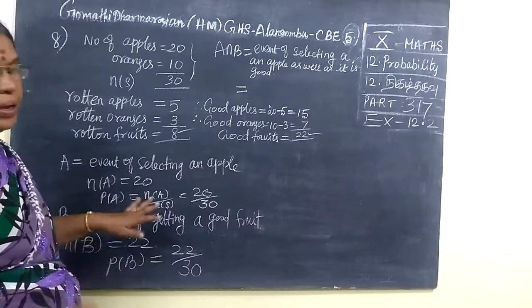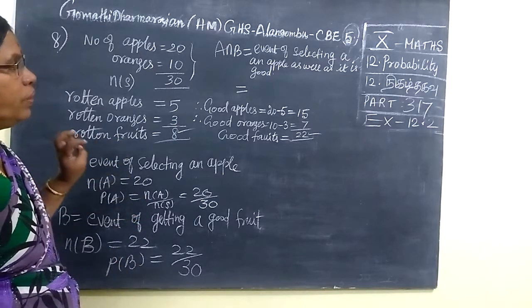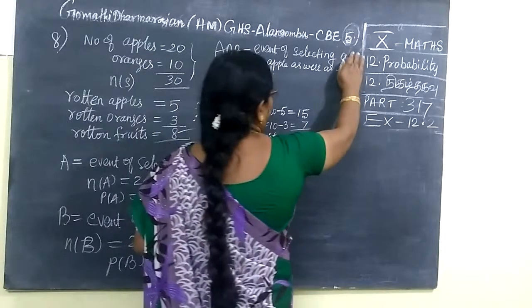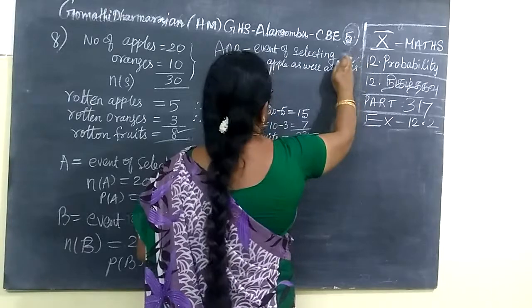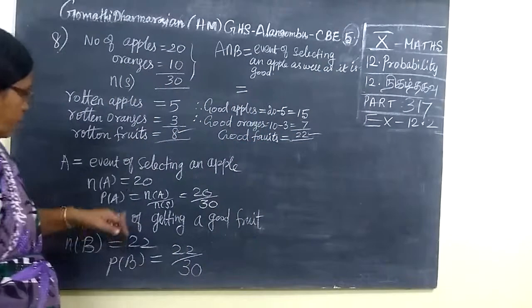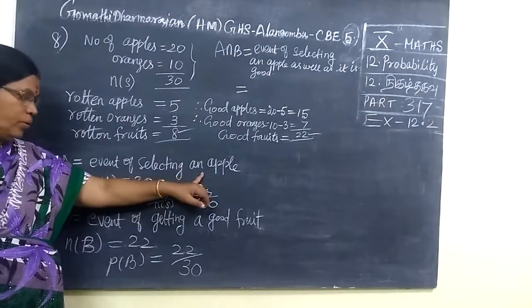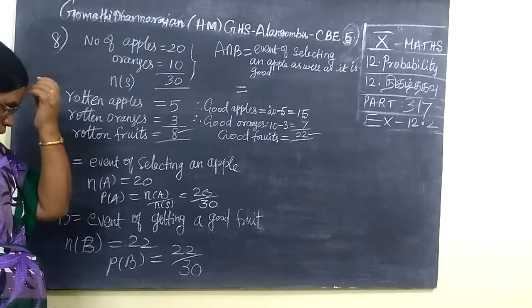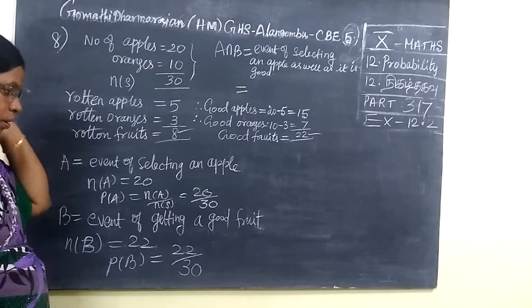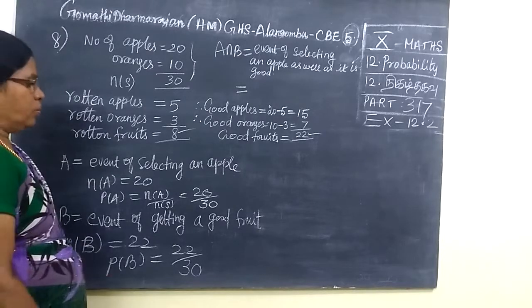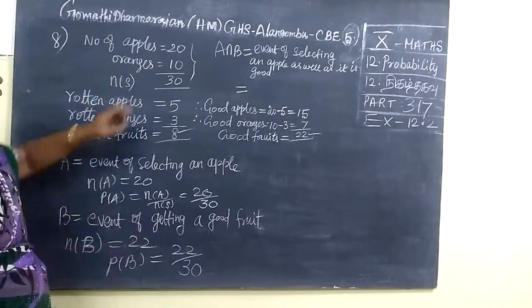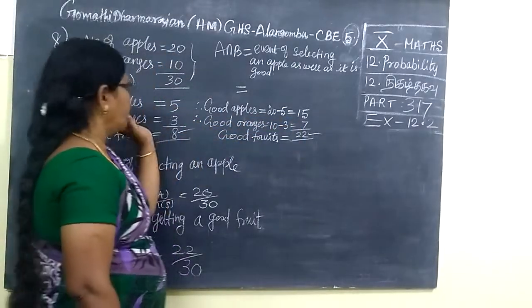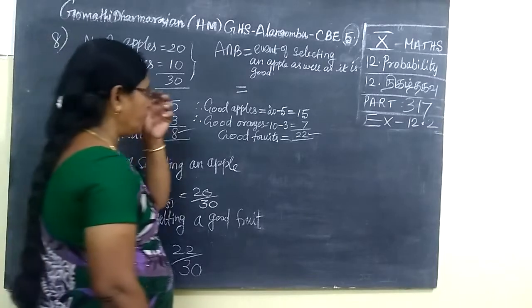If we want to select A intersection B also, we want to find event of selecting an apple as well as it is a good fruit. A intersection B is a good fruit. It should be an apple and a good fruit. So then, total apples are 20. Good apples are 15. Because 5 is separated. So 15.